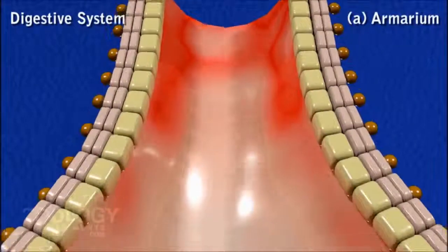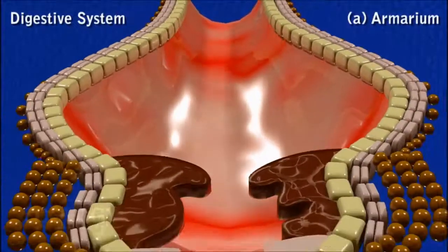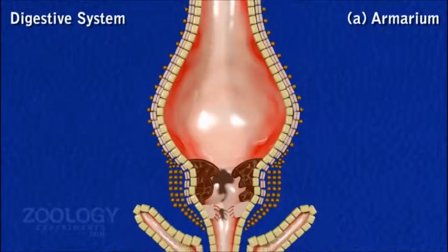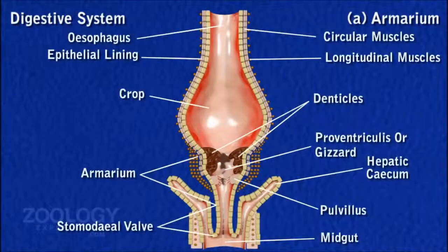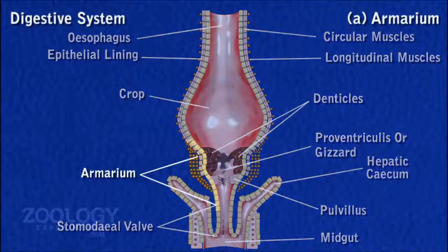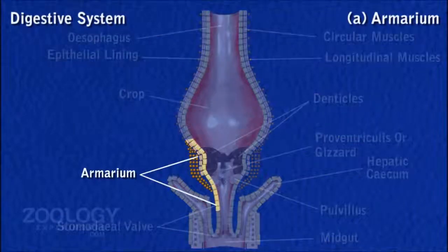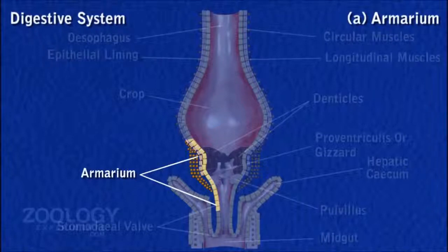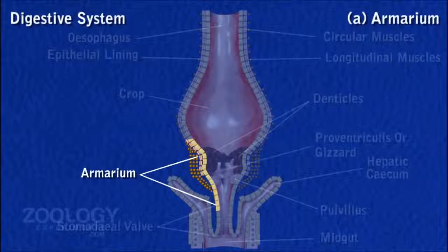Armarium: The armarium possesses internally six longitudinal folds that greatly reduce its lumen. These longitudinal folds alternate with six longitudinal grooves which also bear small secondary folds. The cuticular lining of each longitudinal fold forms in the anterior part a thick plate produced centrally into strong sharp teeth, and in the posterior part a thin plate.